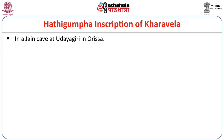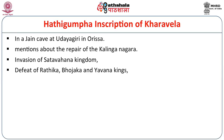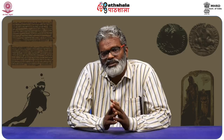Another important inscription is the Hathigumba inscription of Kharavela. It gives a lot of important information regarding the history of Orissa as well as other parts of India. It is located in a giant cave at Udayagiri in Orissa. It mentions the repair of Kalinganagara, the invasion of the Shradhavagana kingdom, the defeat of Ratika, Bojaka, and Yavana kings, the invasion of Rajagriha and Pataliputra, and also mentions clashes the king had with a confederacy of kings from southern India. This is another important inscription from eastern India that sheds light on the political history of the region.